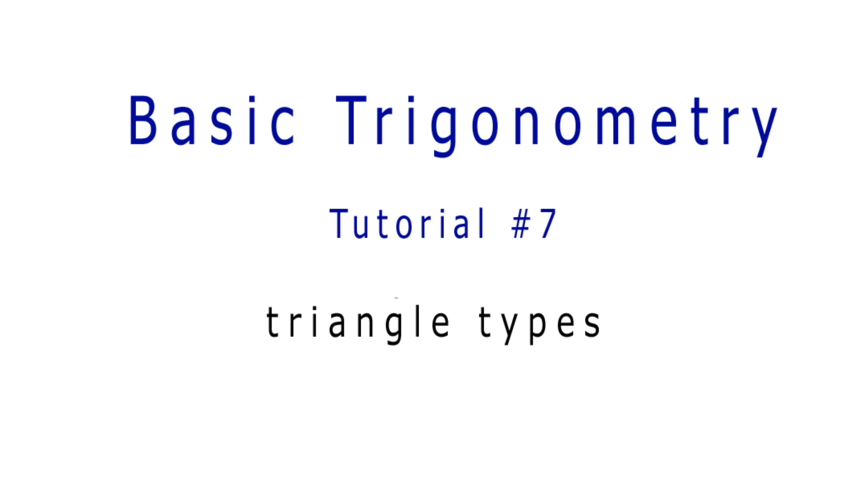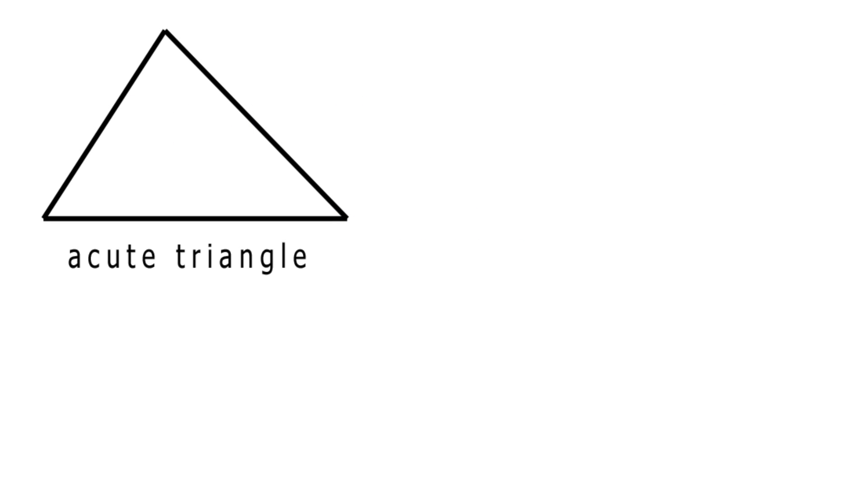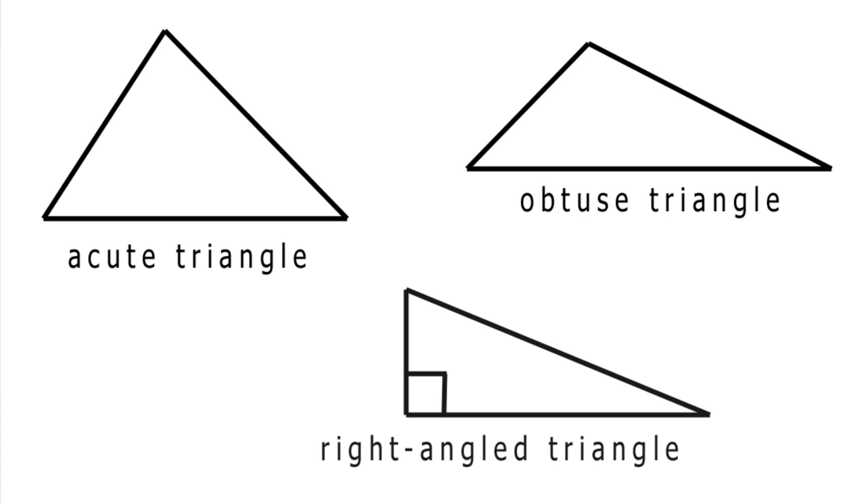These are in no particular order: an acute triangle where the largest angle is acute, that is it's less than 90 degrees. Next is an obtuse triangle where the largest angle is obtuse, that is it is less than 180 degrees but greater than 90 degrees. Finally we have the special case of a triangle with an angle of a particular size contained in it. You might have heard of this before: it's a right angle triangle with a 90 degree angle in it.